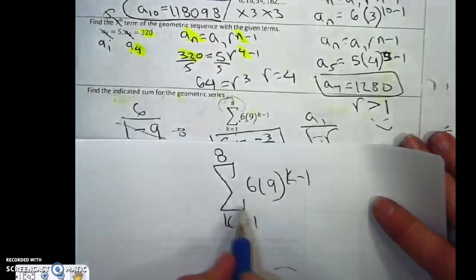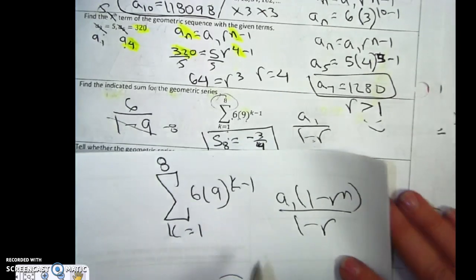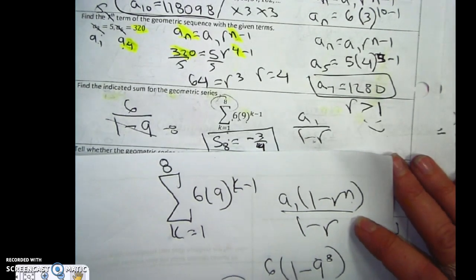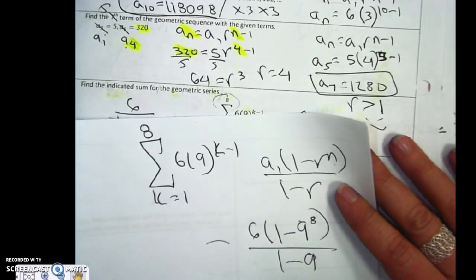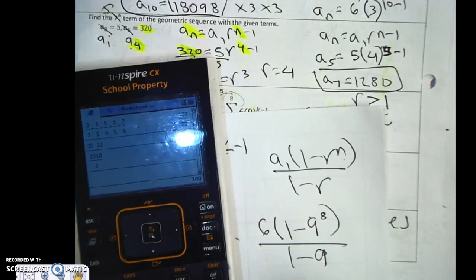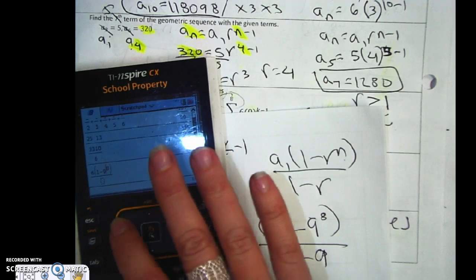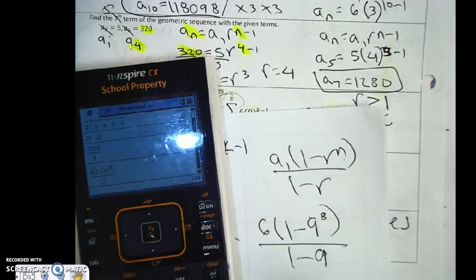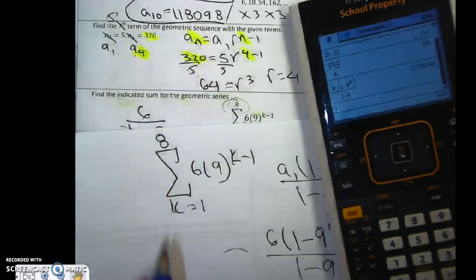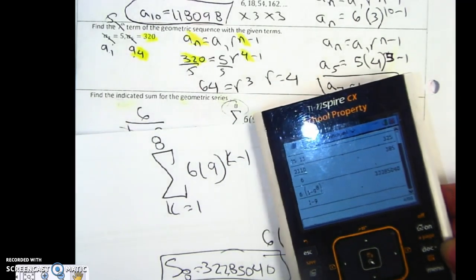So I should have used the formula that doesn't end. Let me redo this. First term 6, 1 minus the ratio which is 9 to the eighth power over 1 minus 9. So let me redo this in the fancy calculator. I'm going to go 6 times parenthesis 1 minus 9 to the eighth. Now if I were you, just in case, I would put this in parenthesis because if it's negative it's going to make a difference. 1 minus 9. And I get a way bigger answer which makes way more sense. So I should have written the sum of the first eight numbers is 3228504.